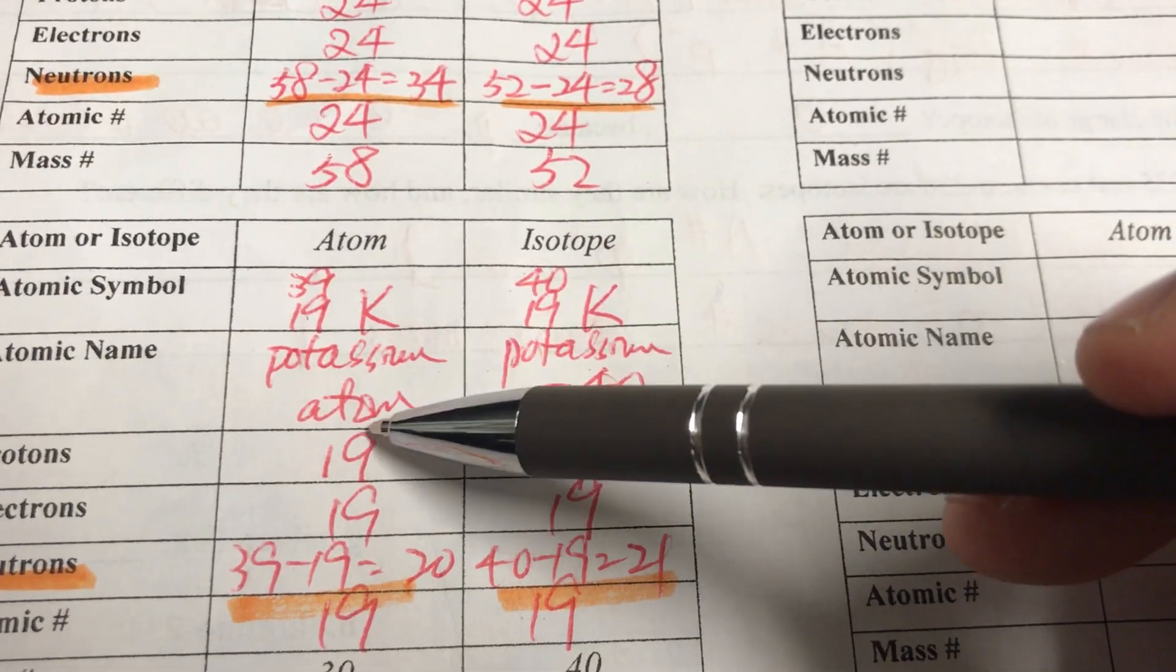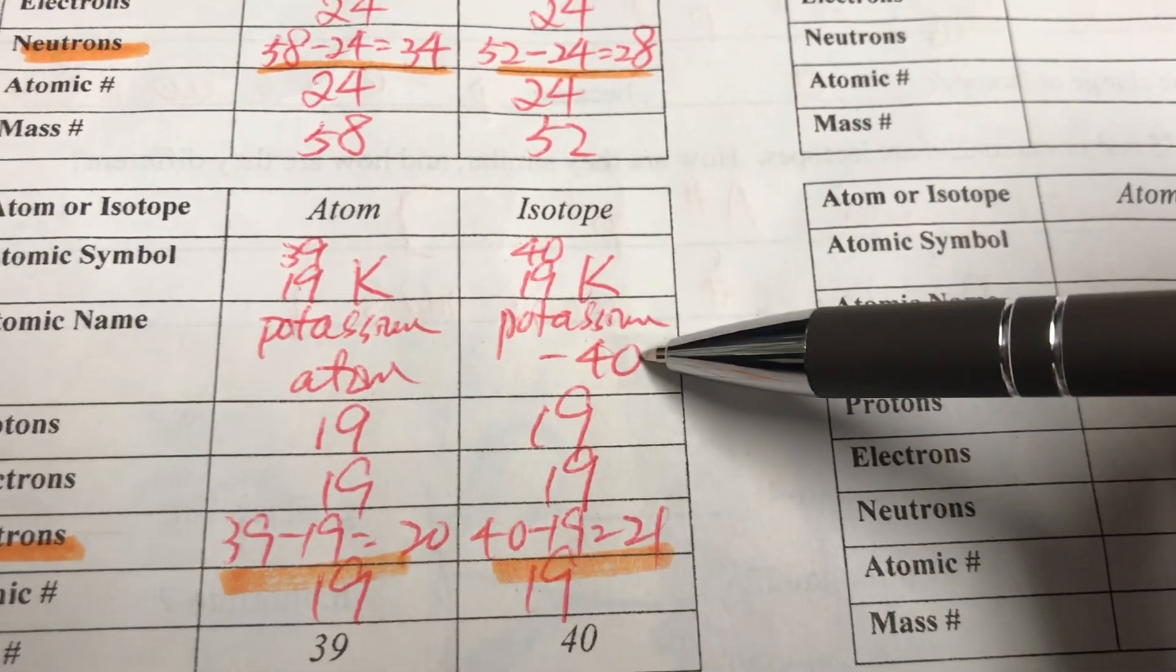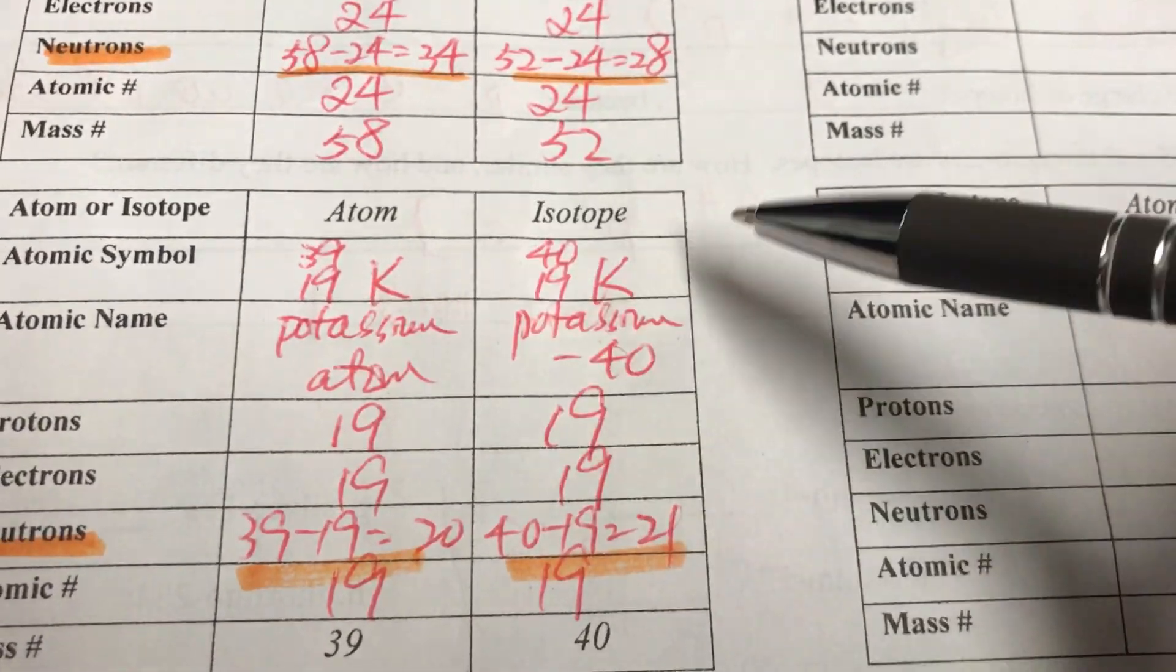So because this is an atom, we name it potassium atom. This is potassium 40 because the mass number is 40, and then we write the mass number.